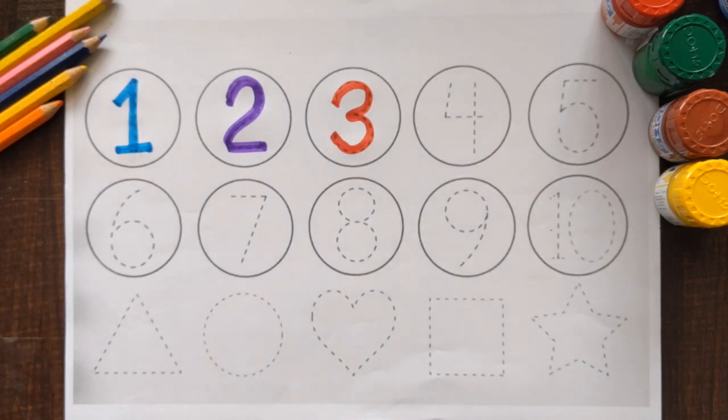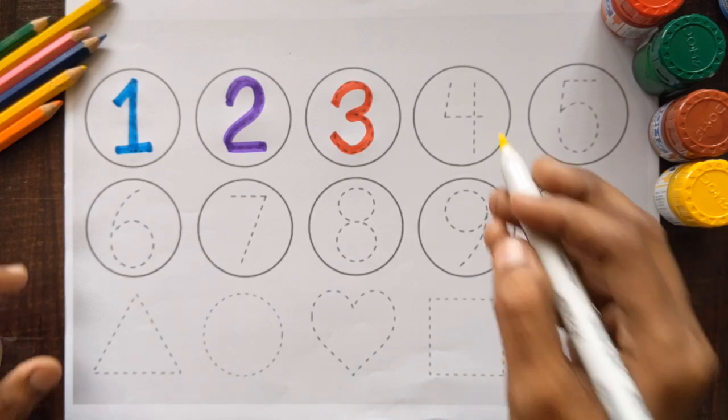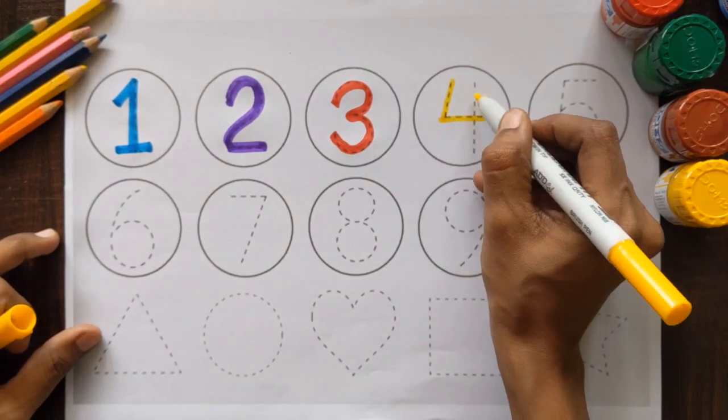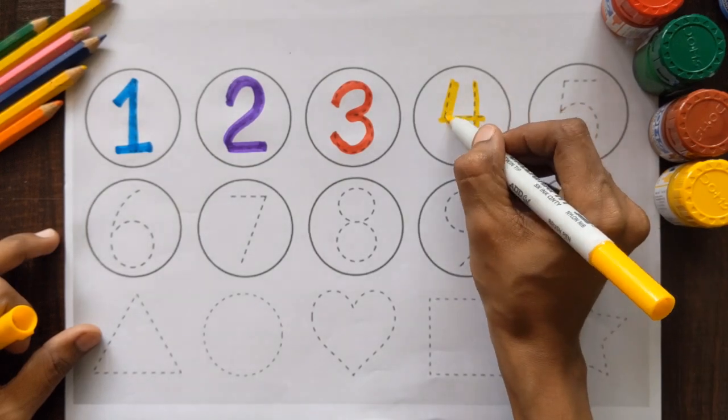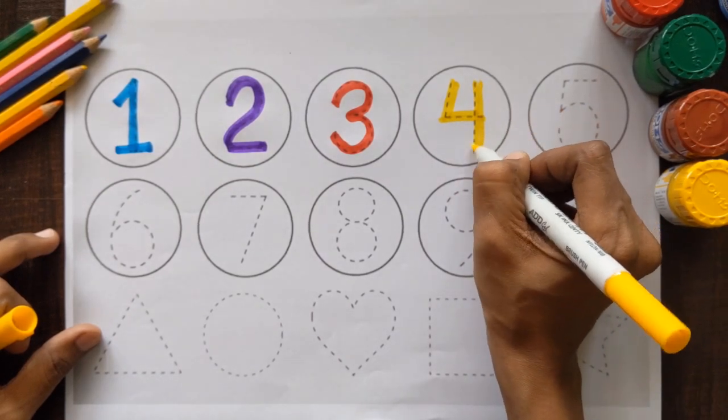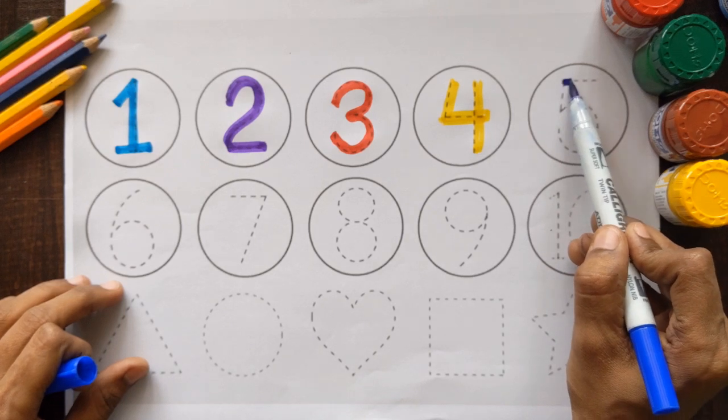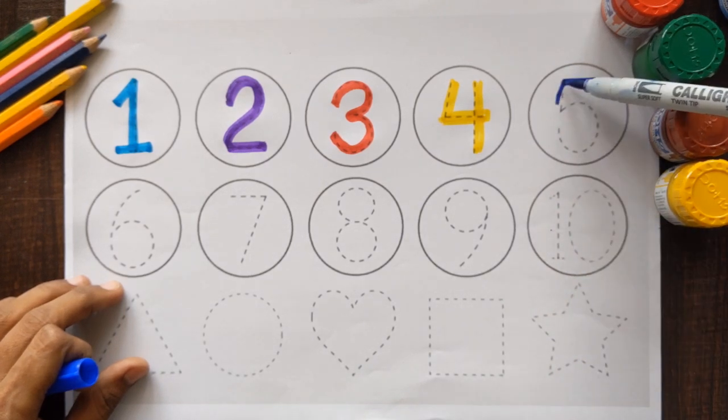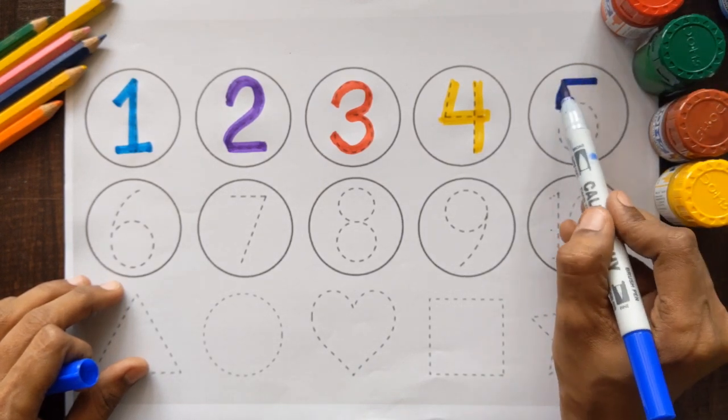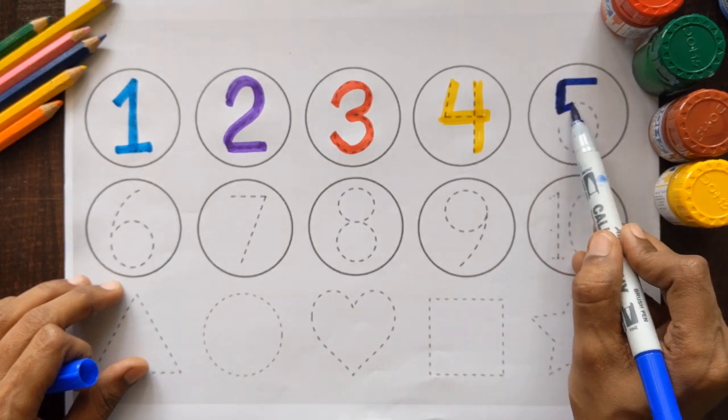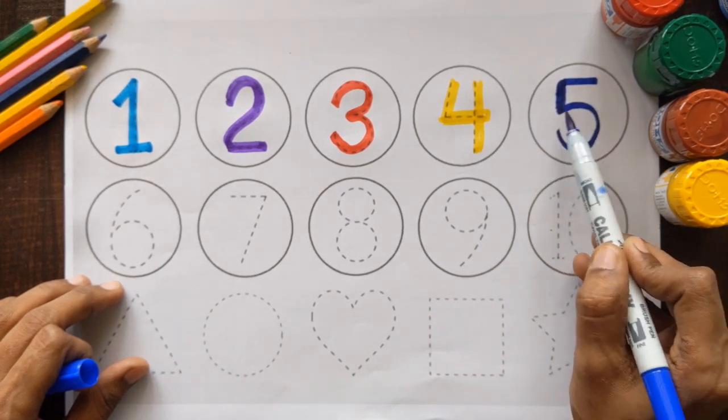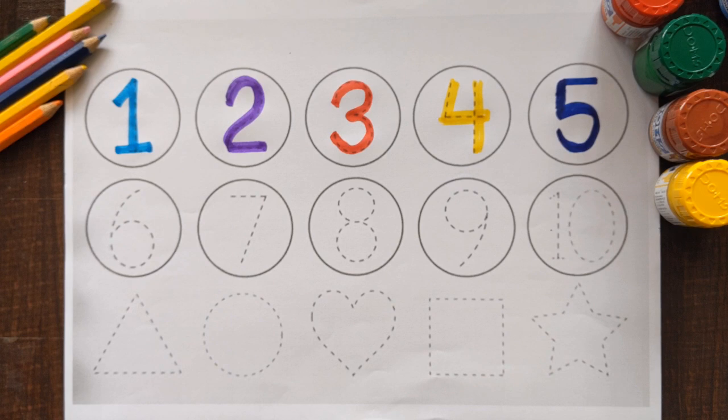After 3, which number is this? Can you tell me? Number 4, yellow color. Number 5, dark blue color.